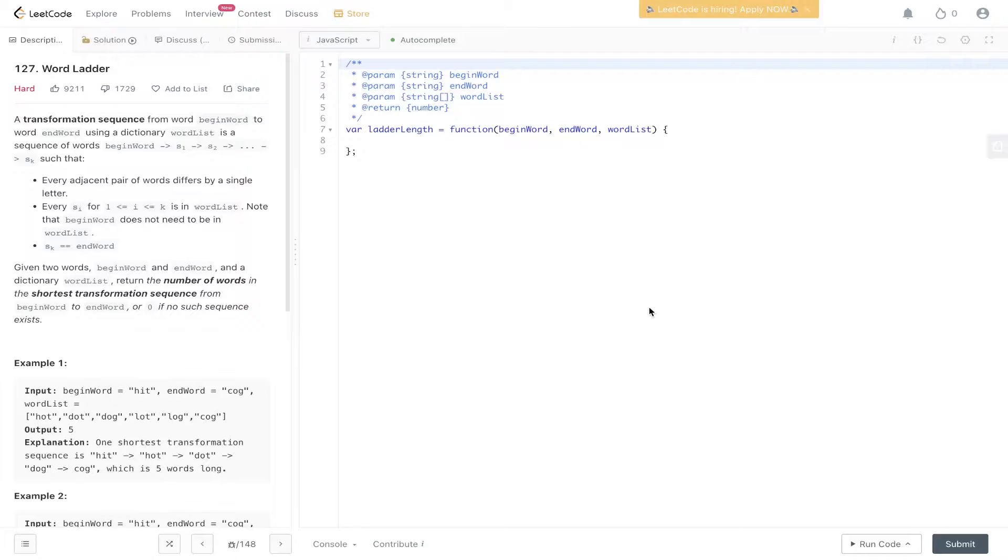Given two words begin word and end word and a dictionary words list, return the number of words in the shortest transformation sequence from begin word to end word or zero if no such sequence exists.